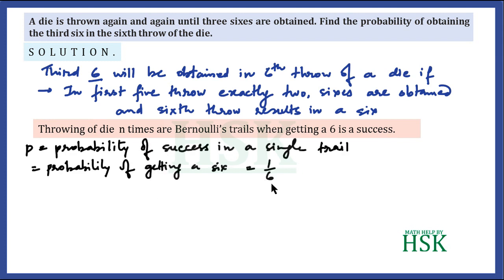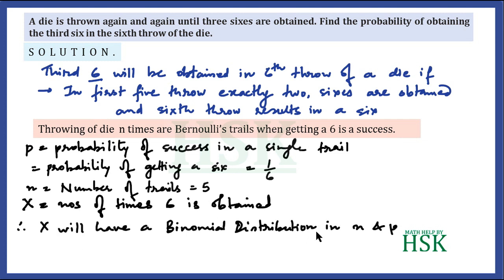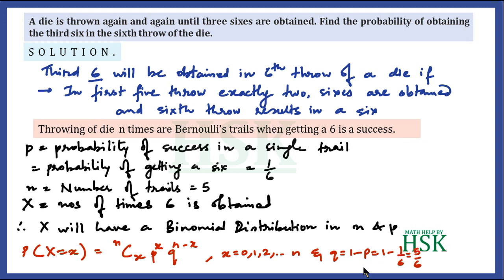The probability of success in a single trial equals the probability of getting a six, which is 1/6, denoted as p. We take n equal to the number of trials, which is five, and x as the number of times six is obtained. Since x has a binomial distribution, we take n = 5, p = 1/6, and q = 5/6.